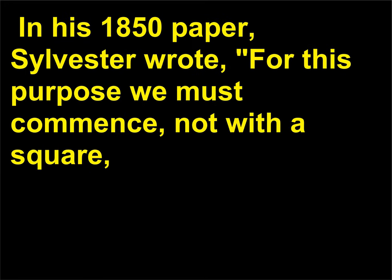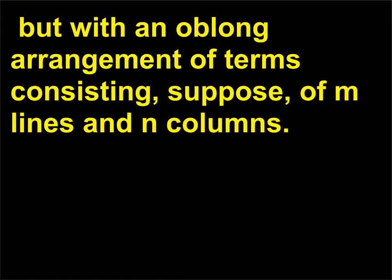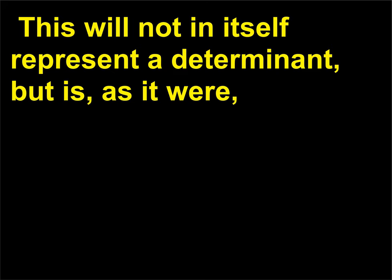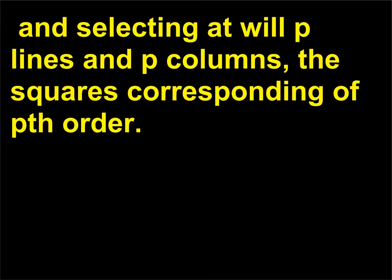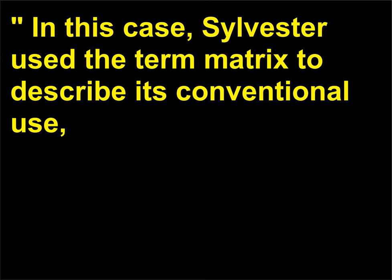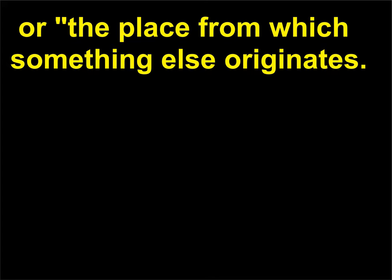In his 1850 paper, Sylvester wrote: 'For this purpose we must commence, not with a square, but with an oblong arrangement of terms consisting, suppose, of m lines and n columns. This will not in itself represent a determinant, but is, as it were, a matrix out of which we may form various systems of determinants by fixing upon a number P and selecting at will p lines and p columns, the squares corresponding of pth order.' In this case, Sylvester used the term matrix to describe its conventional use, or the place from which something else originates.